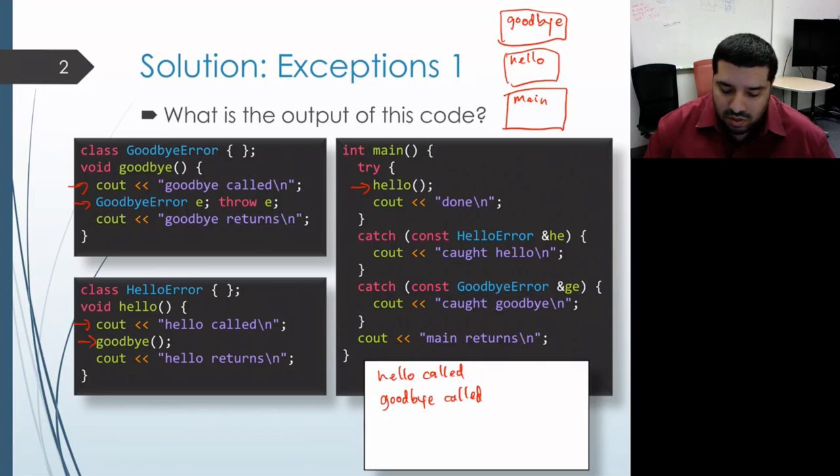Instead, what the program does is it starts looking for a try-catch block. The first thing it will do is determine, are we within a try-block in the current scope? In fact, we're not. We don't have a try-block within goodbye.